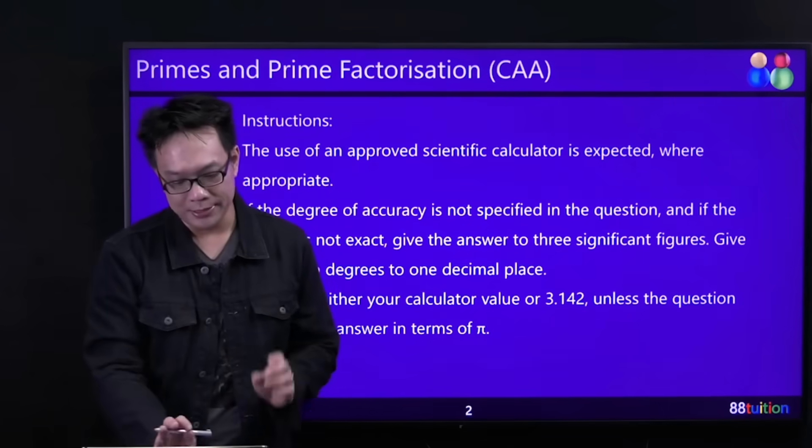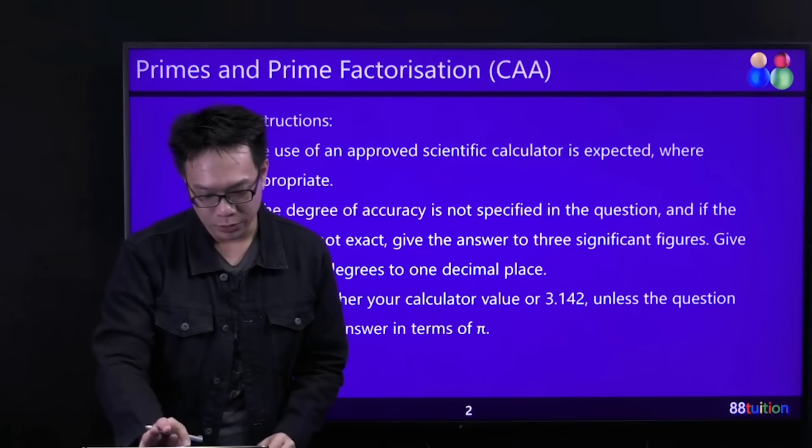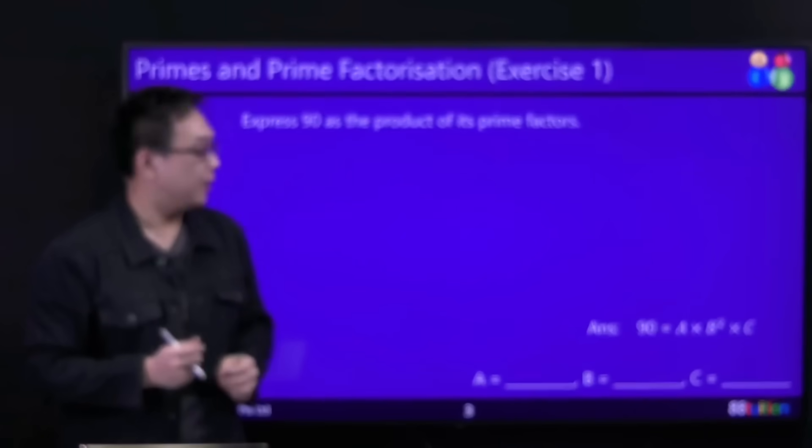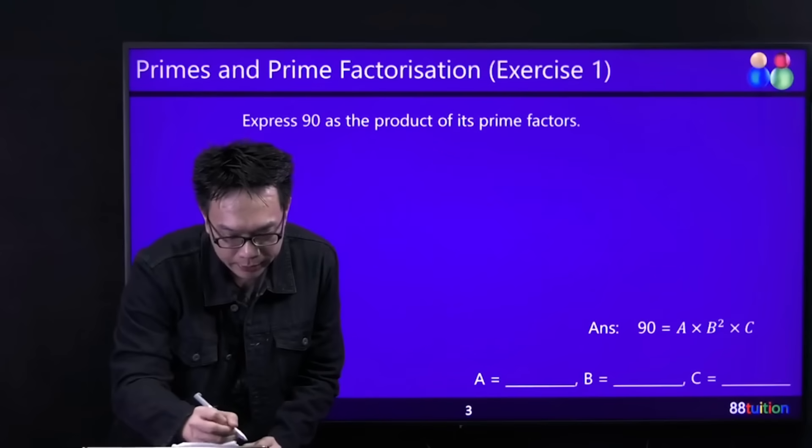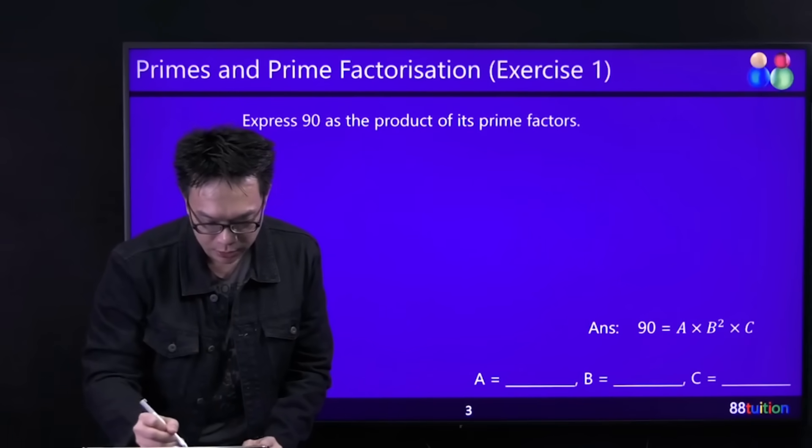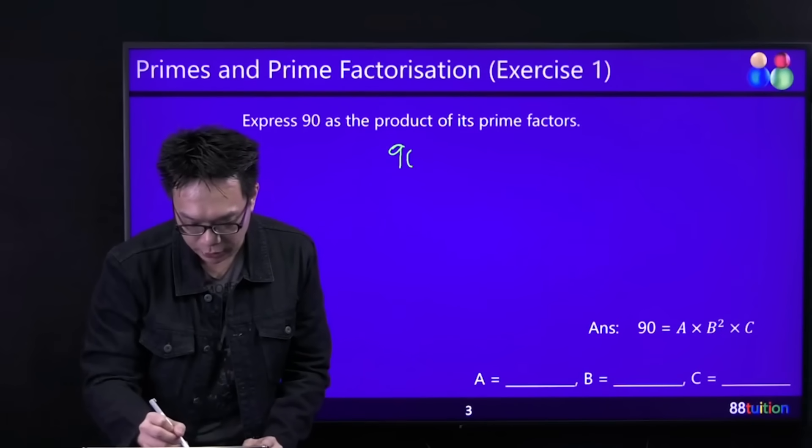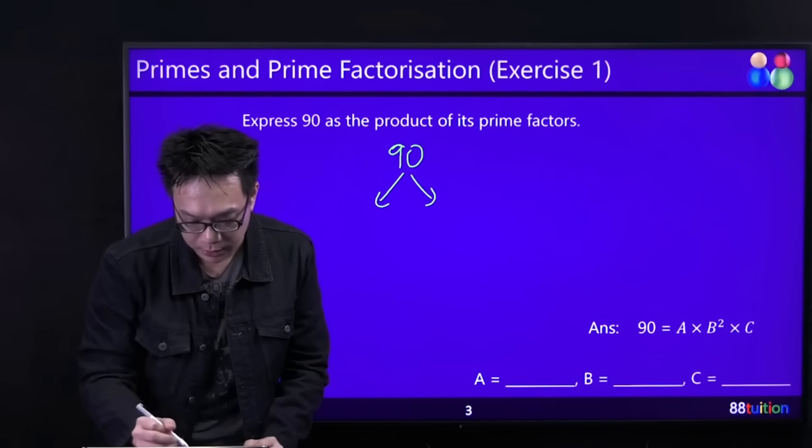This is the common instruction - nothing to worry. Let's take a look at this: Express 90 as a product of its prime factors. Hey, I want to use branching! Let's try to use branching. Keep on using systematic. I want to be creative, okay? Can be, but be careful.